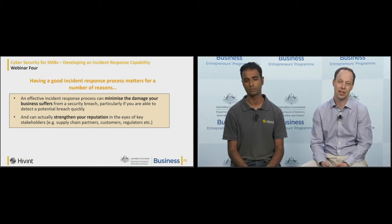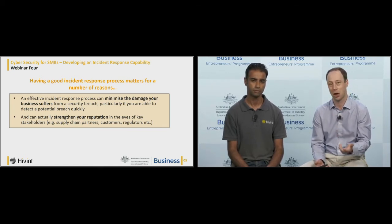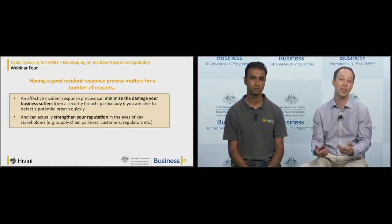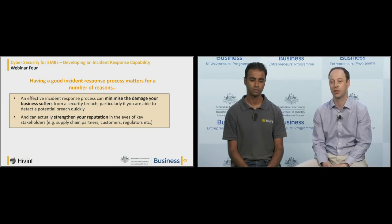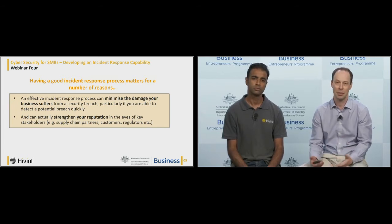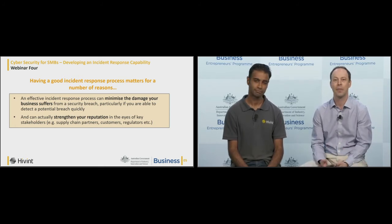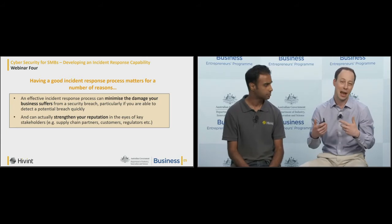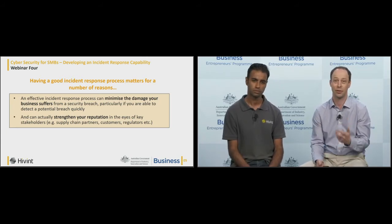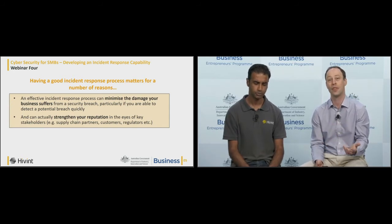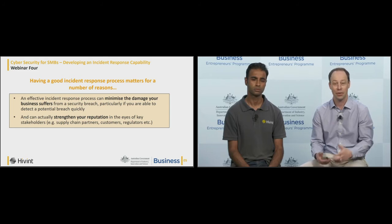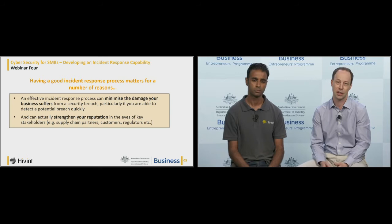Having a good incident response process is important for a couple of reasons. If we accept that an incident is likely to occur at some point, having the process in place will allow you to minimise the loss and prevent the impact from getting out of control. Additionally, having an effective incident response process can actually make your organisation look better in the eyes of customers. Organisations that have responded effectively to product safety events — demonstrating genuine compassion and empathy — have often come out with a stronger brand and greater customer trust than they had beforehand.